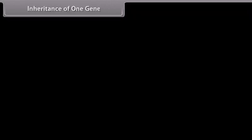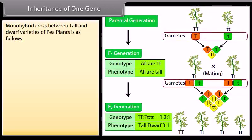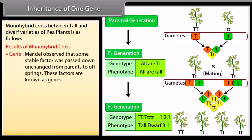Inheritance of one gene. A monohybrid cross between tall and dwarf varieties of pea plants is as follows. Mendel observed that some stable factor was passed down unchanged from parents to offspring; these factors are known as genes.